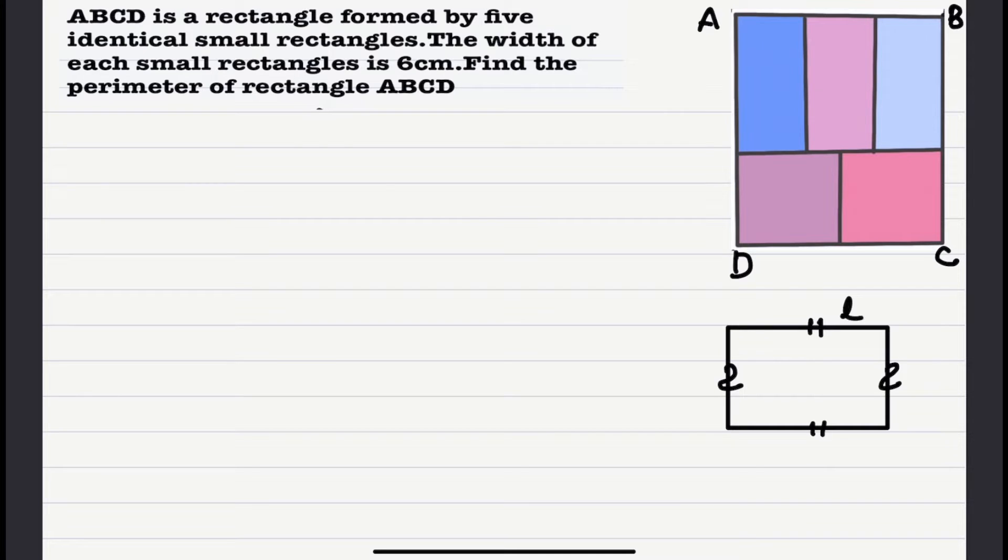This is length and this is breadth, and the perimeter of a rectangle is given by 2(L plus B). Now what is perimeter? The perimeter is the length of the boundary of any figure.